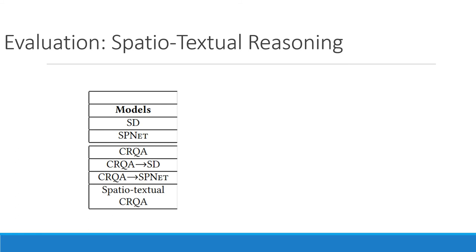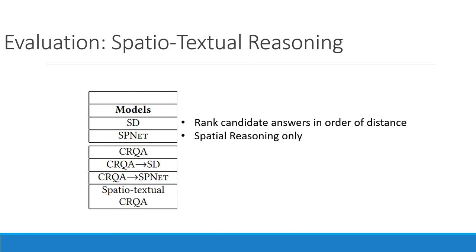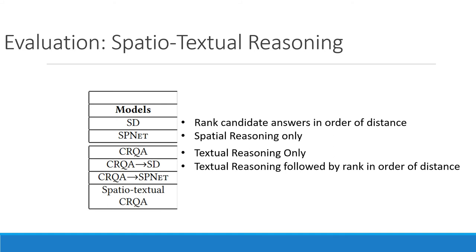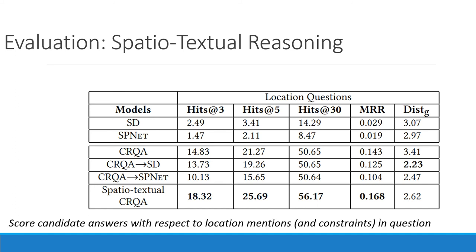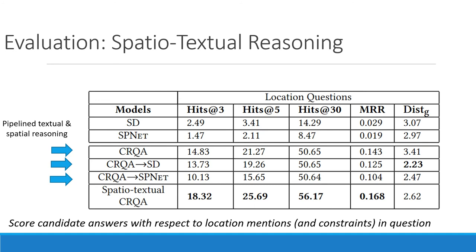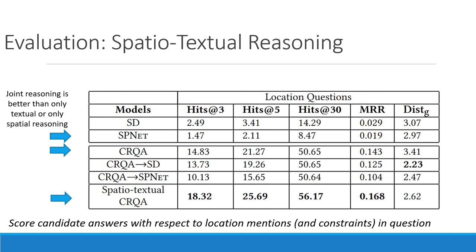We compare the performance of spatial-textual reasoning with multiple baselines: SD, which ranks candidates by distance; SPNET, which is just the geospatial reasoner; and CRQA, which is just the textual reasoner. We also compare with two pipeline-based models — running the textual reasoner followed by ranking by distance, and running the textual reasoner followed by spatial reasoning. We find that joint spatial-textual CRQA is significantly better than models using only location data, pipeline methods, and models using only textual or only spatial reasoning.